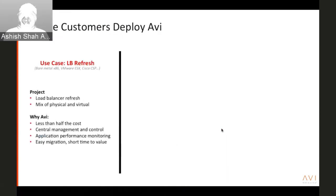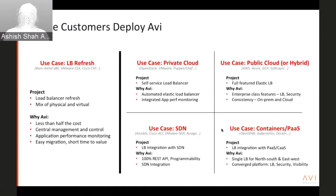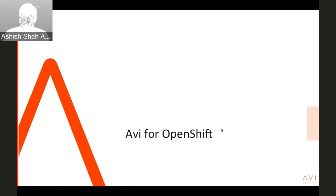Avi works across traditional load balancer refresh use cases — bare metal or VM — replacing hardware load balancers and saving over half the cost for customers. It works in private cloud use cases with OpenStack, Ansible automation, public cloud, SDN environments, and container and PaaS solutions. We have common Red Hat customers across all of the above use cases. Now let's switch gears into how this works in OpenShift.